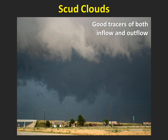Scud clouds are ragged, detached clouds that form in and around thunderstorms. These scud clouds actually represent rain-cooled air. Because that air is cool and humid, it allows clouds to form closer to the ground when compared to the thunderstorm's main updraft base. Scud by itself is harmless, and it is very useful to spotters. Scud moves along with the wind, so you can watch it to determine whether the storm has inflow or outflow.